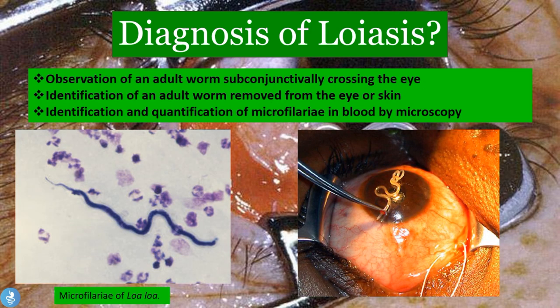Now let's talk about the diagnosis of loasis. Observation of the adult worm subconjunctively crossing the eye is a fairly obvious diagnosis. Additionally, identification of an eye worm removed from the eye or the skin can be used. Finally, identification and quantification of microfilaria in the blood by microscopy — where a blood sample is examined for the presence of loa loa microfilaria — is also a diagnostic method.